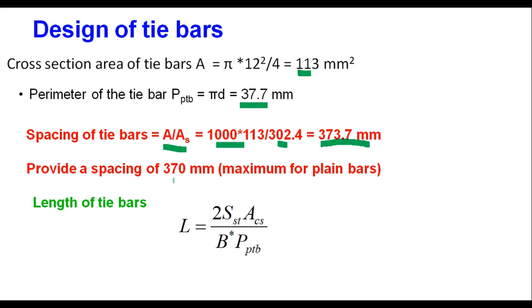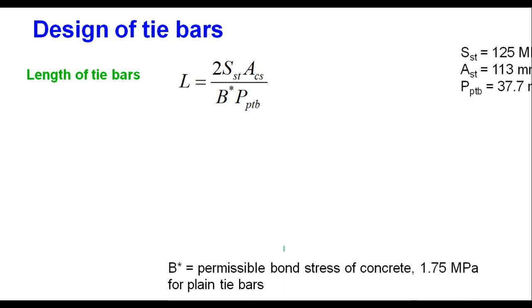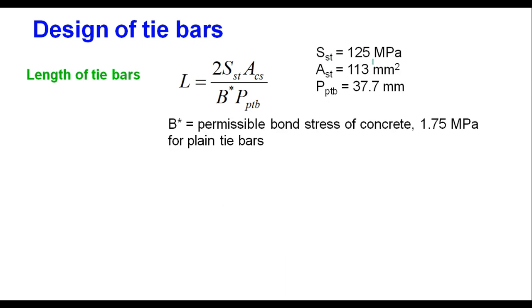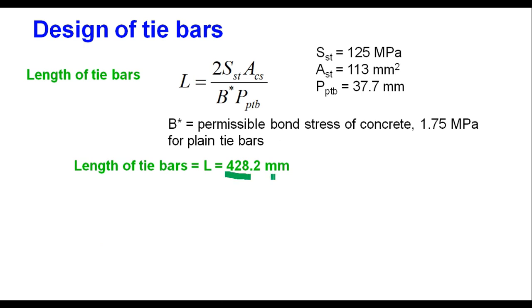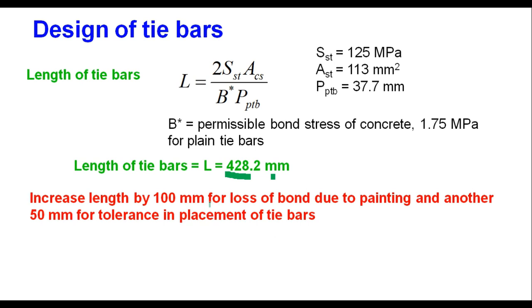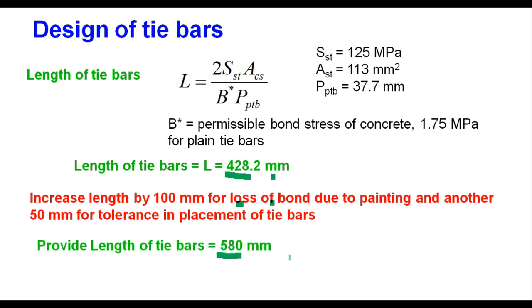The spacing of tie bars is calculated as: (113 / 302.4) × 1000 = 373.7 mm. A spacing of 370 mm is provided, which is the maximum for plain tie bars. The length of tie bar is calculated using L = 2 × ST × Acs / (B* × PTB), substituting ST = 125 MPa, Acs = 113 mm², PTB = 37.7 mm, and B* = 1.75 MPa for plain tie bars, giving L = 282 mm. Adding 100 mm for loss of bond due to painting and 50 mm for tolerance in placement gives a total tie bar length of 580 mm.